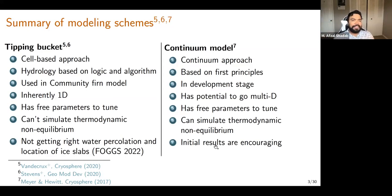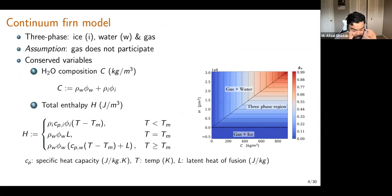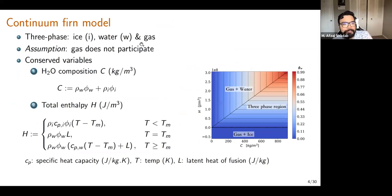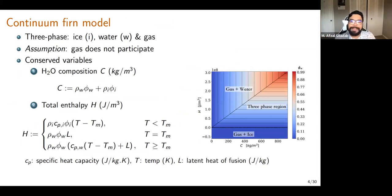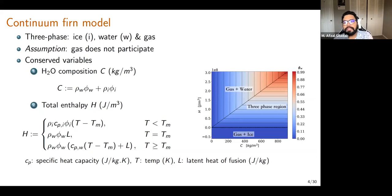Our model has three phases: ice (subscript I), liquid water (subscript W), and gas. We don't treat gas as participating because it's much less viscous than ice or water and has much lower thermal conductivity — so it acts as an insulator that doesn't carry much enthalpy or provide friction. So we assume gas is present but not doing anything to the system.